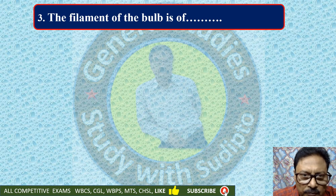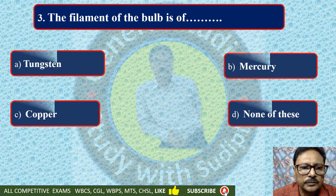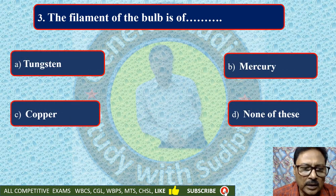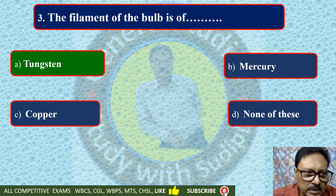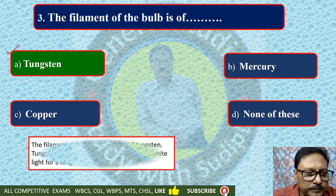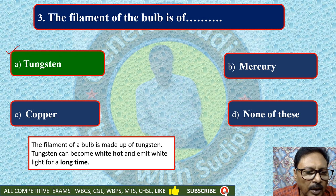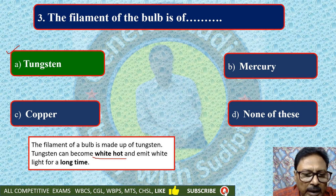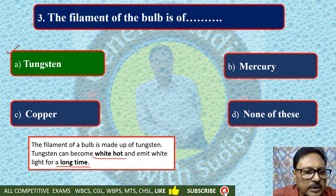The filament of the bulb is made of — tungsten, mercury, copper, or none of these. The filament of the bulb is tungsten. The material used as a filament is tungsten. The filament of the bulb is made up of tungsten. Tungsten can become white-hot and emit white light for a long time. That is why tungsten metal is used as a filament.